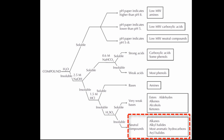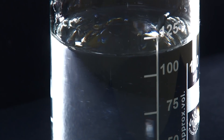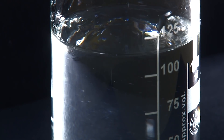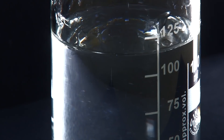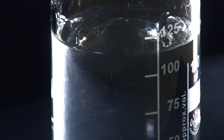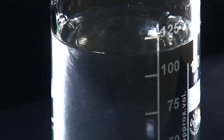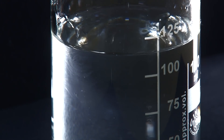Many organic compounds aren't soluble at all, however. Quite often it's difficult to see if two clear liquids are dissolving or not, so look for mixing lines like these ones that you see here. Even if all of the substance doesn't dissolve, the presence of these mixing lines will tell you that it's at least partially soluble.